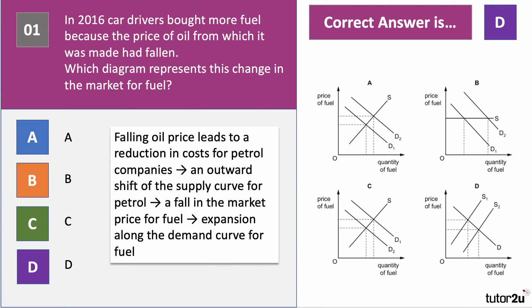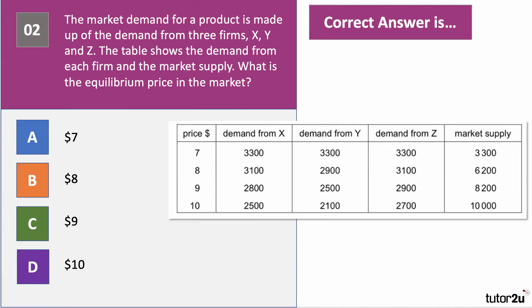Take a look at question number two. The market demand for a product is made up of the demand from three firms X, Y and Z. The table shows the demand from each firm and also the market supply. The question is: what is the equilibrium price in the market? Press the pause button and press play when you want the answer.